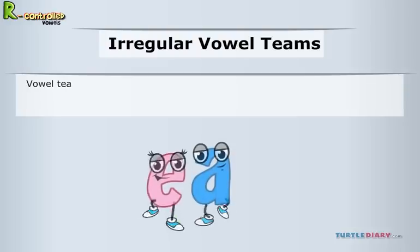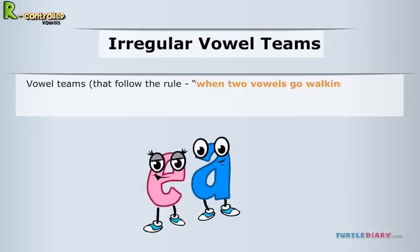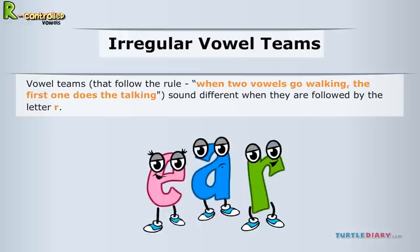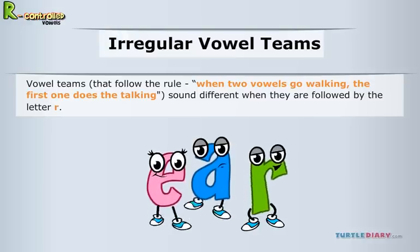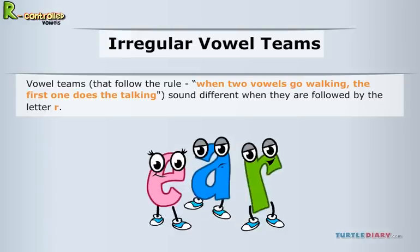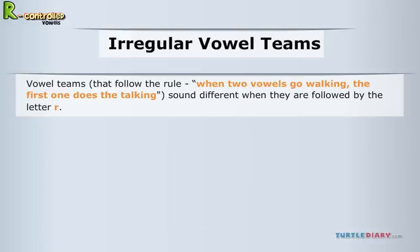Vowel Teams that follow the rule. When two vowels go walking, the first one does the talking sound different when they are followed by the letter R. Most of the time, the vowel team E-A sounds like a long E. If you read the following words, you'll hear the long E sound.